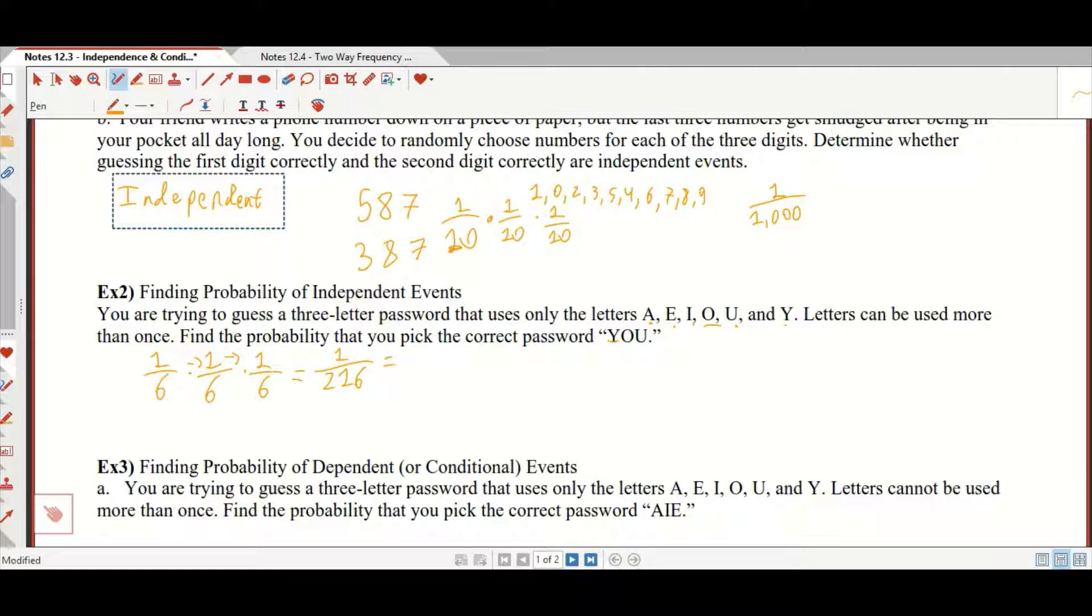which is 0.00462 repeating, which is 0.462 repeating percent. Pretty low, but you do have a better chance of getting this correct than you would be calling your friend from the previous example.